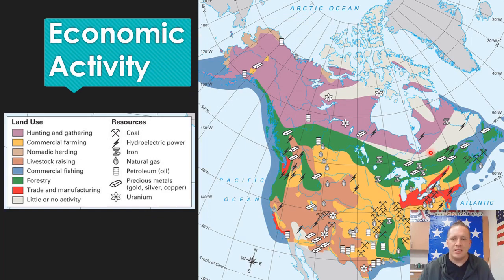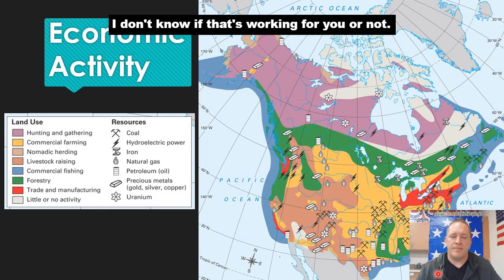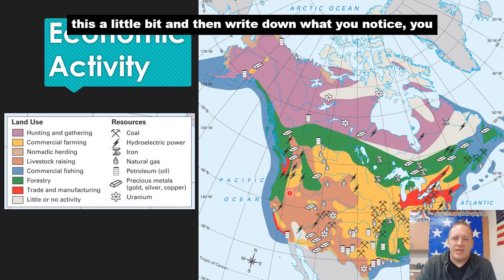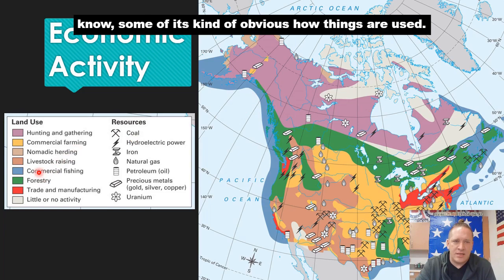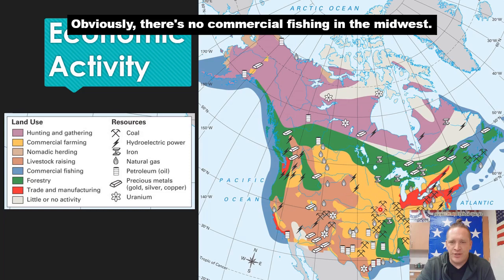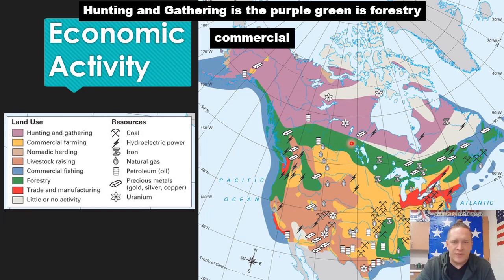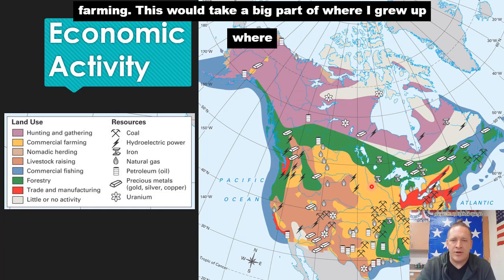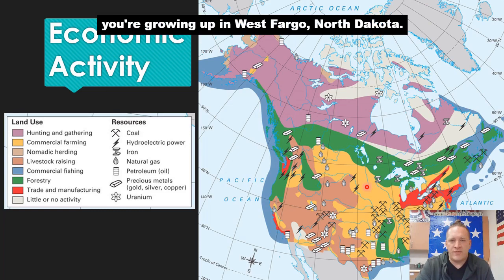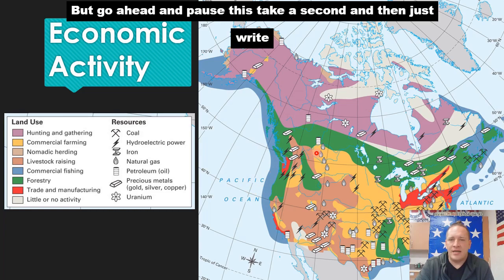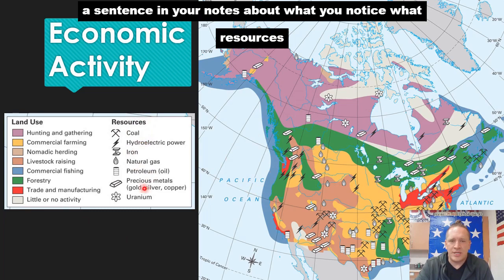Economic activity — in your notes you have to write a little something about this. You might want to pause the video and study the map a bit, then write down what you notice. Some of it is obvious: the blue here is commercial fishing, all along the waterways. Hunting and gathering is the purple, green is forestry. Commercial farming takes up a big part of where we're located here in West Fargo, North Dakota. Just write a sentence about what resources you notice and where they are.